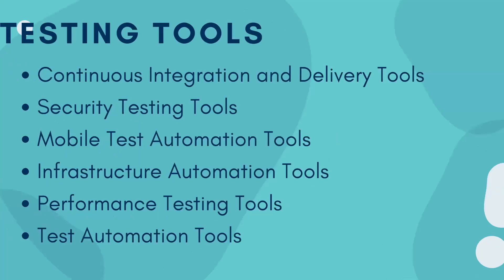Now, what are the tools used for software testing? There are many tools, but I've noted down a few important ones that are mostly in demand in the current scenario. The six categories are: continuous integration and delivery tools, security testing tools, mobile test automation tools, infrastructure automation tools, performance testing tools, and test automation tools. To work with these tools, you need knowledge of specific technologies and languages, which I'll explain in detail.